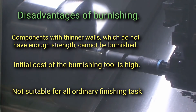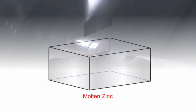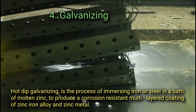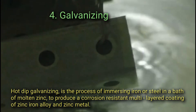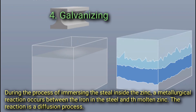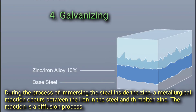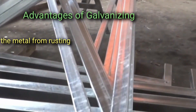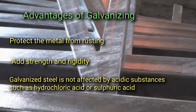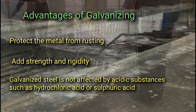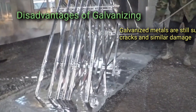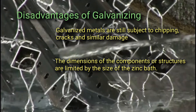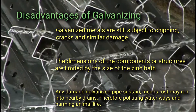4. Galvanizing. Hot-dip galvanizing is the process of immersing iron or steel in a bath of molten zinc to produce a corrosion-resistant multi-layered coating of zinc-iron alloy and zinc metal. During the process of immersing the steel inside the zinc, a metallurgical reaction occurs between the iron in the steel and the molten zinc; the reaction is a diffusion process. Advantages of galvanizing: protects the metal from rusting, adds strength and rigidity, galvanized steel is not affected by acidic substances such as hydrochloric acid or sulfuric acid. Disadvantages of galvanizing: galvanized metals are still subject to chipping, cracks, and similar damage; the dimensions of the component or structure are limited by the size of the zinc bath; any damaged galvanized pipe may cause rust to run into nearby drains, polluting waterways and harming animal life.